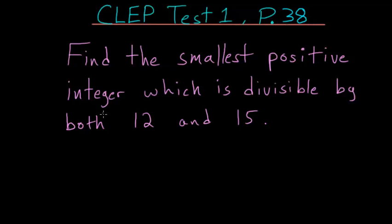Find the smallest positive integer which is divisible by both 12 and 15. So this problem is essentially looking for the least common multiple of 12 and 15.